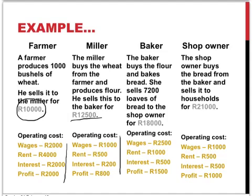In the baker's case, the intermediary input was the flour, and she also uses different factors of production to produce the bread. Finally, there's the shop owner who buys the bread from the baker — the cost of the bread being the intermediary cost — and sells it on to the households, the final consumers, for 21,000 rands in total. The shop owner also employs factors of production and has to pay wages, rent, interest, and profit.